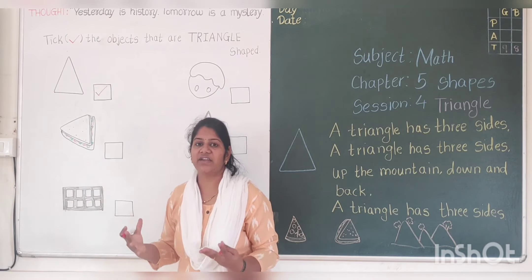This is a sandwich. Sandwich has how many corners and sides? Let's count. 1, 2, 3. 3 corners. 1, 2, 3. 3 sides. No, this is not a triangle object. Next. Is this a triangle object? Let's count how many sides and corners. 1, 2, 3, 4. 4 corners. 1, 2, 3, 4. 4 sides. No, this is not a triangle object.